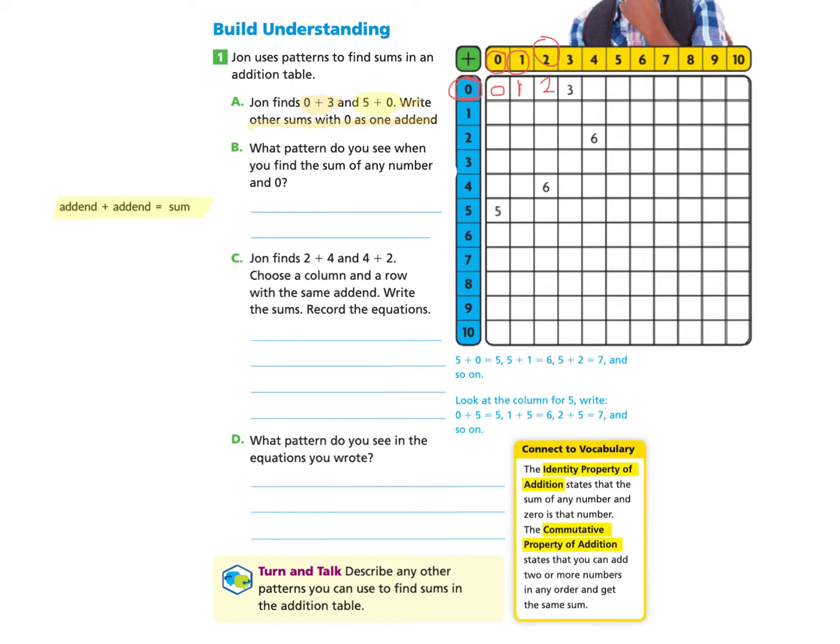0 plus 3, we already have that answer. 0 plus 4 is 4. 0 plus 5 is 5. 0 plus 6 is 6. 0 plus 7 is 7. 0 plus 8 is 8. 0 plus 9 is 9. And 0 plus 10 is 10.